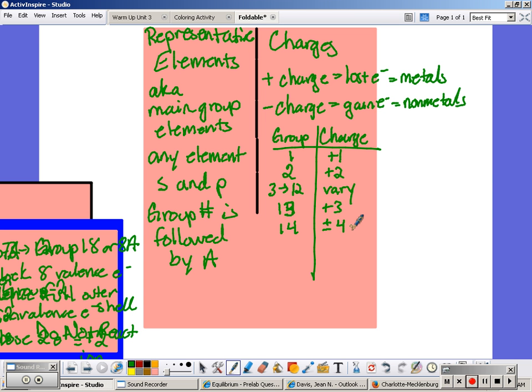Group 15, we now have 5 valence electrons so now it's going to start being easier to gain electrons than to lose them. Group 16 is negative 2, 17 is negative 1, 18 would be 0 or none because they have their full outer shell.